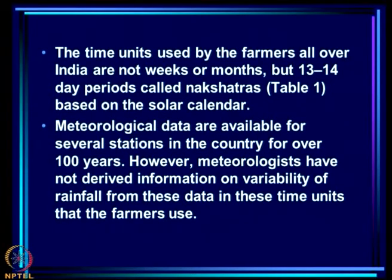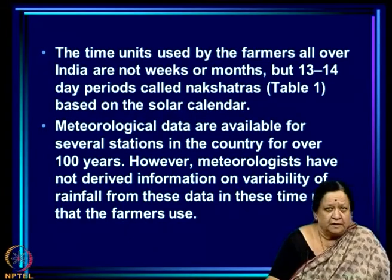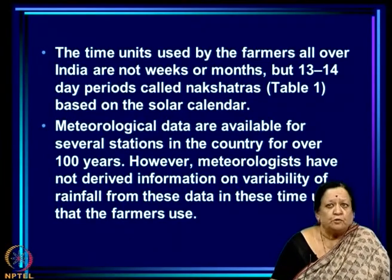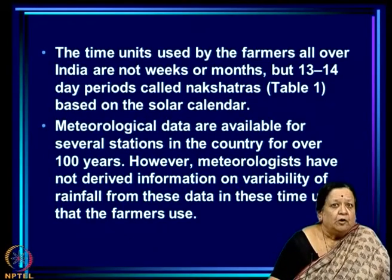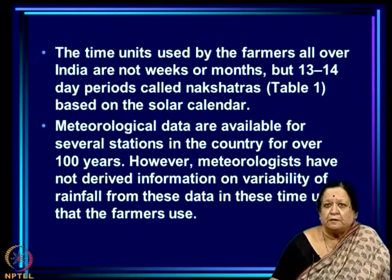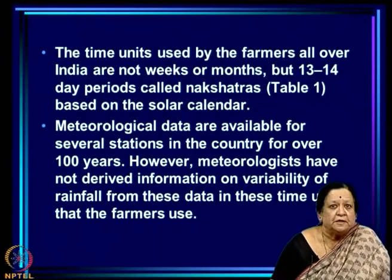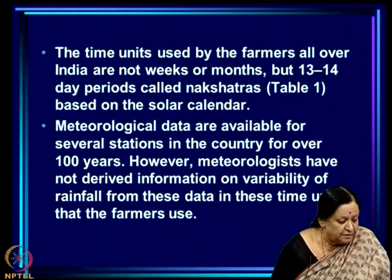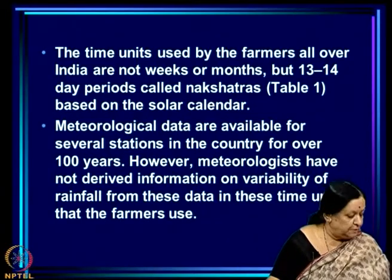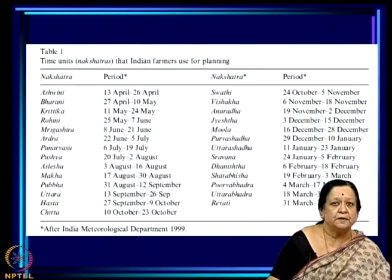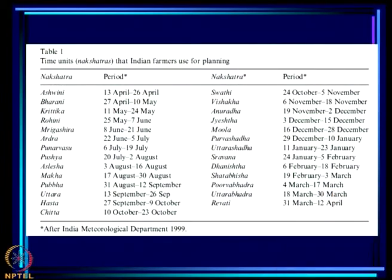Notice that the time units used by farmers — Adhra, Poonarvasu, Uttara, and so on — are not weeks or months but 13 to 14 day periods called nakshatras, based on the solar calendar. It is very important to remember that these are solar nakshatras, beginning with Ashwini (13th–26th April), then Bharani, Kritika, Rohini, and so on.